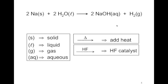Sometimes additional information is included in a chemical equation. A Greek letter delta above the reaction arrow means heat must be added to get the reaction to proceed at a reasonable rate. A catalyst — a chemical substance added to speed up the reaction — is neither consumed nor destroyed, so it is neither a reactant nor a product. Instead, we write it directly above the reaction arrow. In the sodium-water reaction shown here, no catalyst is needed because sodium reacts vigorously with water as soon as it is immersed.